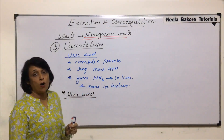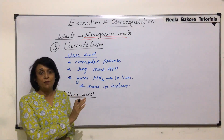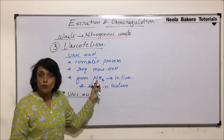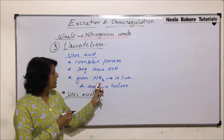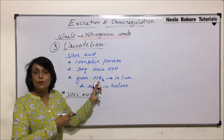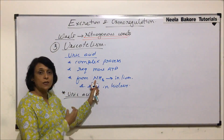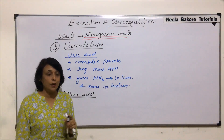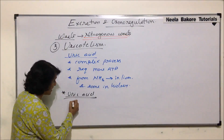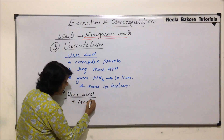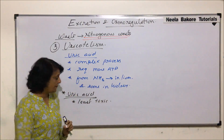...is less toxic than even urea. If we talk of toxicity levels: maximum toxic was ammonia — in ammonotelic organisms it was removed as soon as it formed. If it could not be removed, it had to be converted into something less toxic, which ureotelic organisms did by converting ammonia into urea. Here, ammonia is converted into an even less toxic substance — uric acid — which is the least toxic of the three.